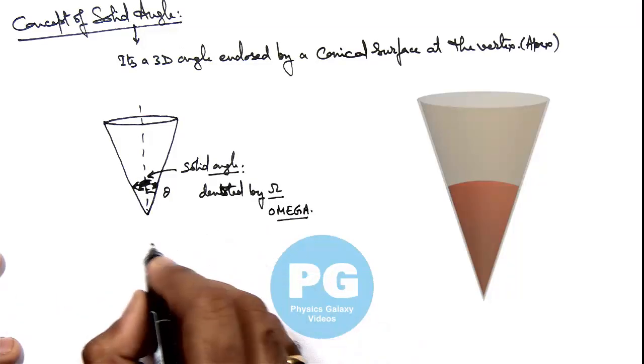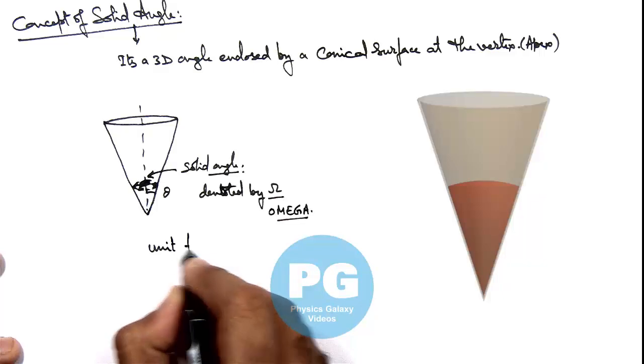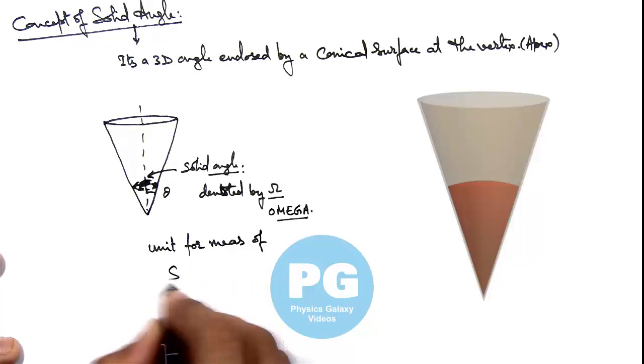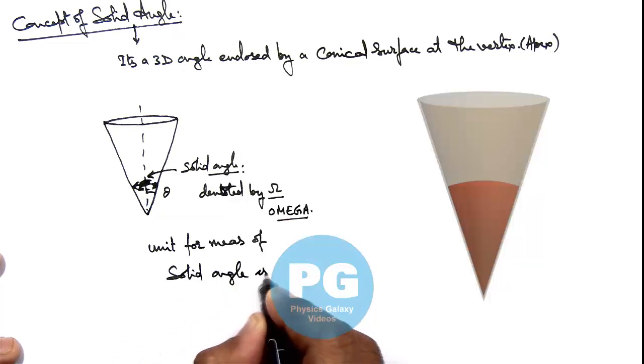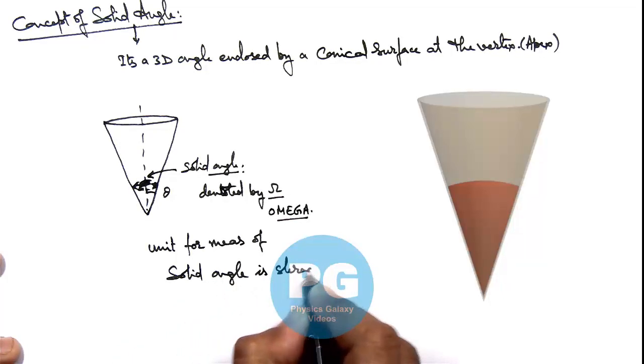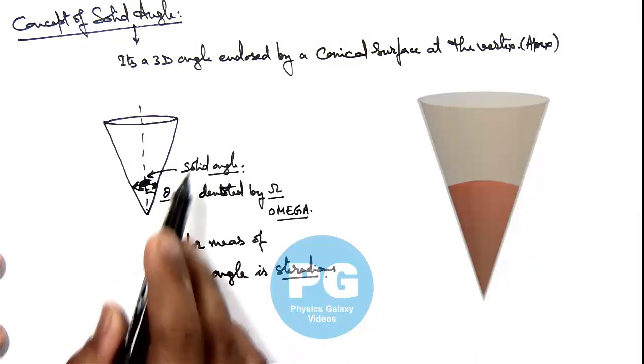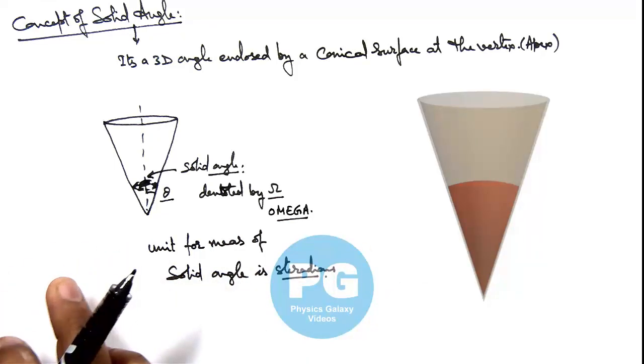Now this is also given a separate unit for measurement. Unit used for measurement of solid angle is steridians. Normal 2 dimensional angle is measured in radians. The solid angle is measured in steridians. This is just a basic idea to give you an understanding of what exactly a solid angle is.